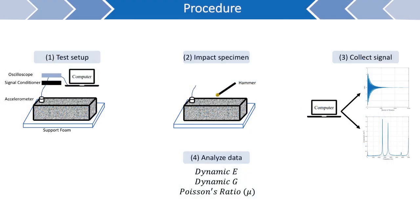First, we will take a brief look at the procedure for this test. During testing, an oscilloscope is used to collect the signal measured by the accelerometer. To generate that signal, the specimen is impacted using a hammer. This impact can be at various locations to generate different resonant modes, which will be discussed in more detail later. That signal is then stored and processed on a computer. During this testing, a LabVIEW program was used to collect both the time domain and frequency domain signals.